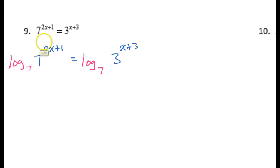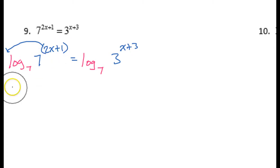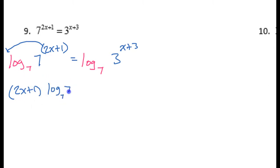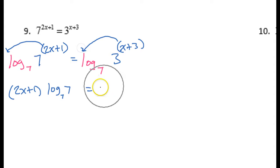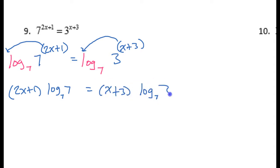Next, we will use the power rule that says that you can take an exponent and move it to the front of the logarithm. So this would be the same thing as 2x plus 1 — please use parentheses — times the log base 7 of 7. And I will do the same thing over here, moving the x plus 3 out to the front according to the power rule. So I will have x plus 3 times the log base 7 of 3.